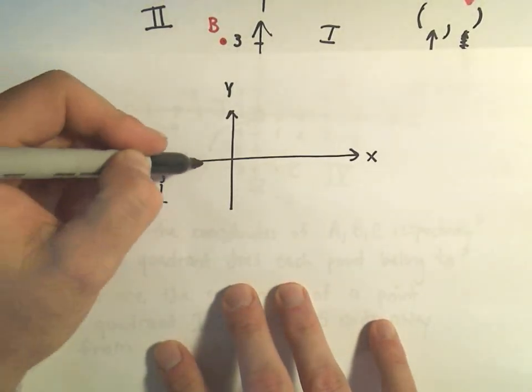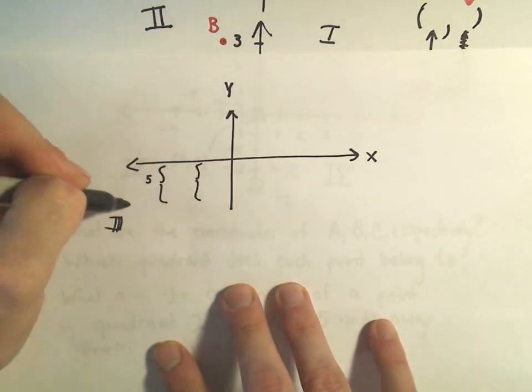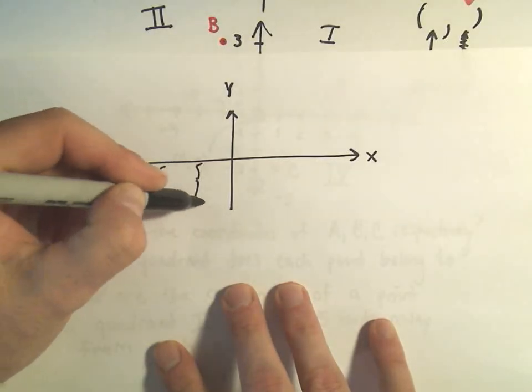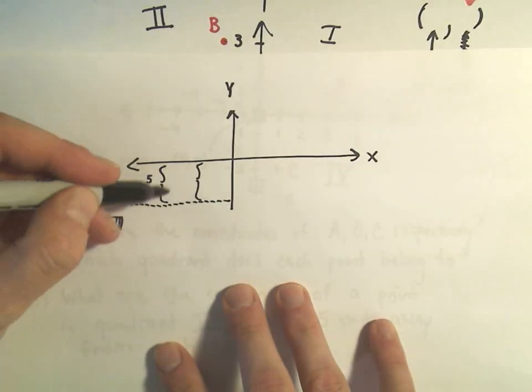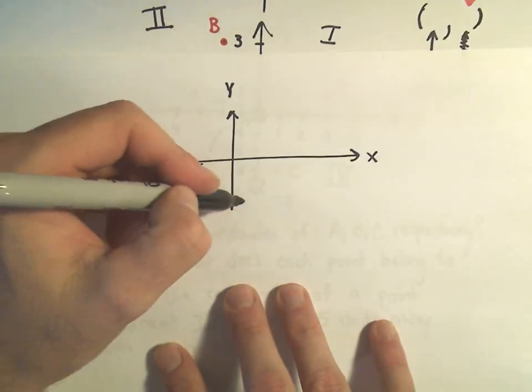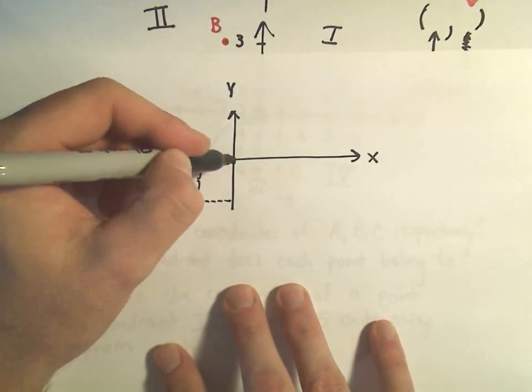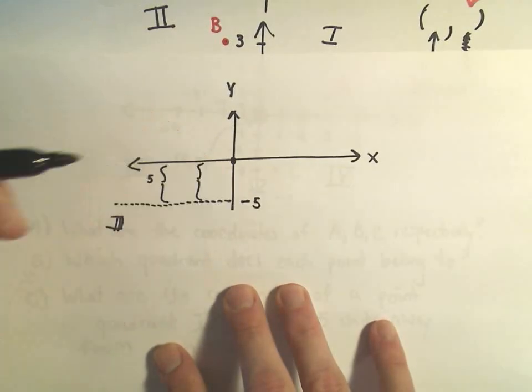I could be a couple different places. I could be really anywhere along this line. Anywhere along this line I would be 5 units down. Since we're below the origin, this would be the y coordinate of negative 5.